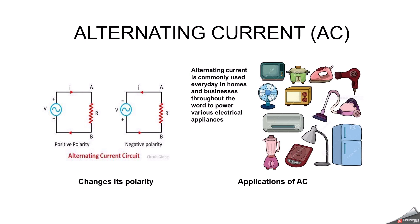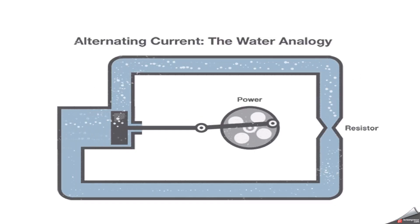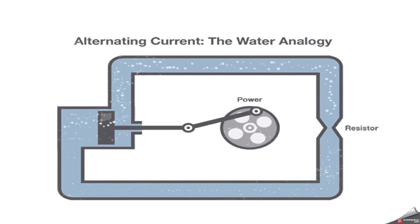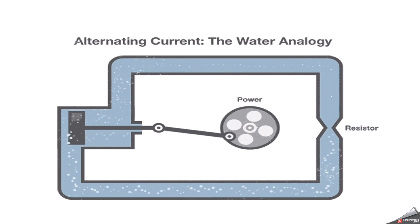Alternating current. What is alternating current? Alternating current means flow of charge that changes direction periodically. As a result, the voltage level also reverses along with the current. Mainly, alternating current will be used to power houses and office buildings. Majorly, alternating current changes its polarity.